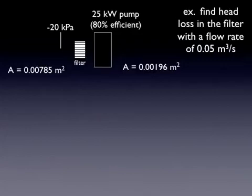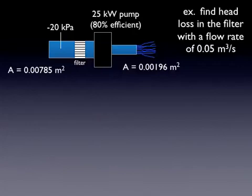Let's do an example with this. We have flow through a pipe into a pump and then out a smaller pipe that then jets into the atmosphere. It passes through a filter and the pressure is measured upstream of the filter as negative 20 kilopascals. We've got information on the pump and the areas of the cross-sectional areas of the pipes before and after the pump. So with a given flow rate, the question is find the head loss in the filter.